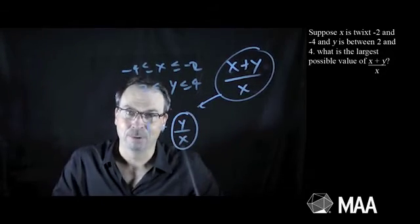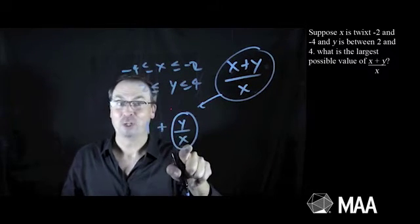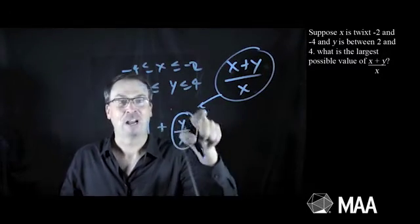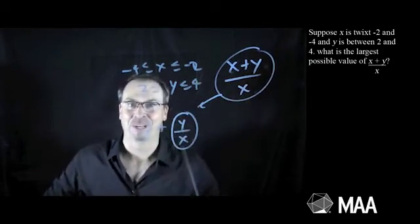Can I make that as big as possible? Because if so, then I'm good. Okay, this seems more manageable. y is definitely positive, x is definitely negative. I feel like I can figure out what makes this as large as possible, add 1 to it, and then that's the largest possible value of that one.